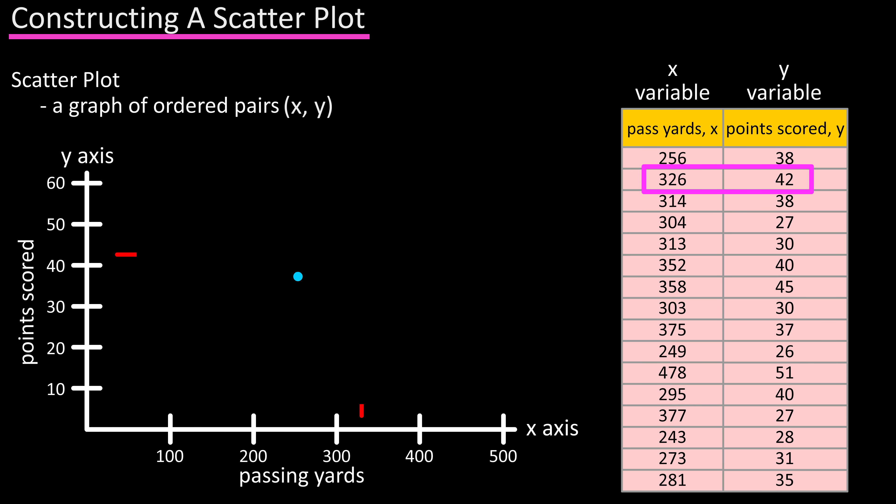Next is 326 for x and 42 for y, and we put a dot at that point of intersection. When we continue this process for all 16 of the ordered pairs in the table, as I've done here.